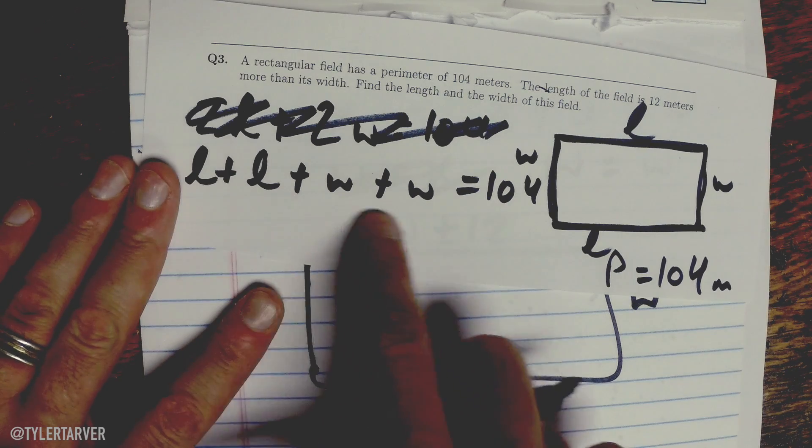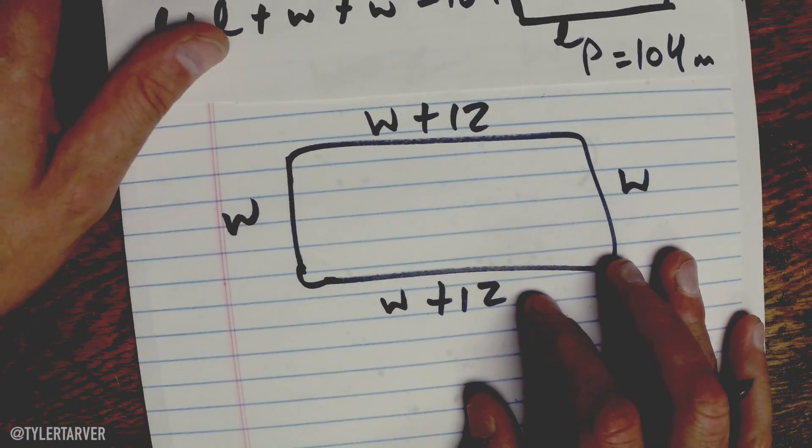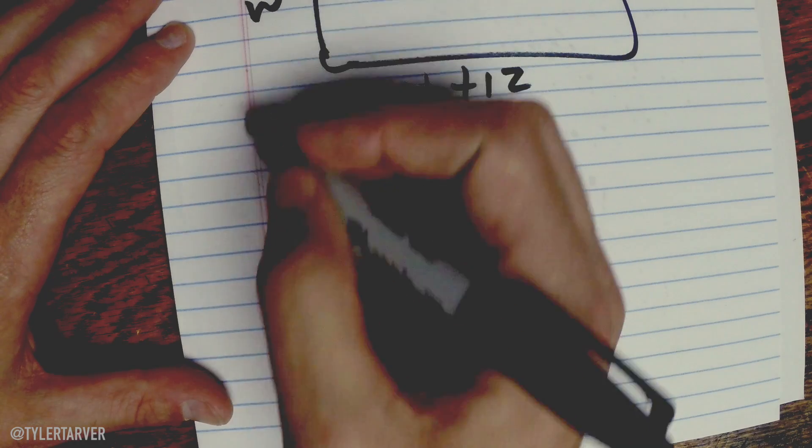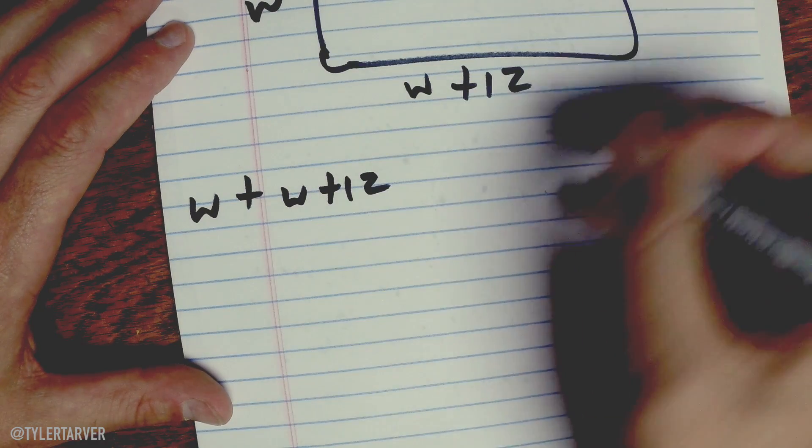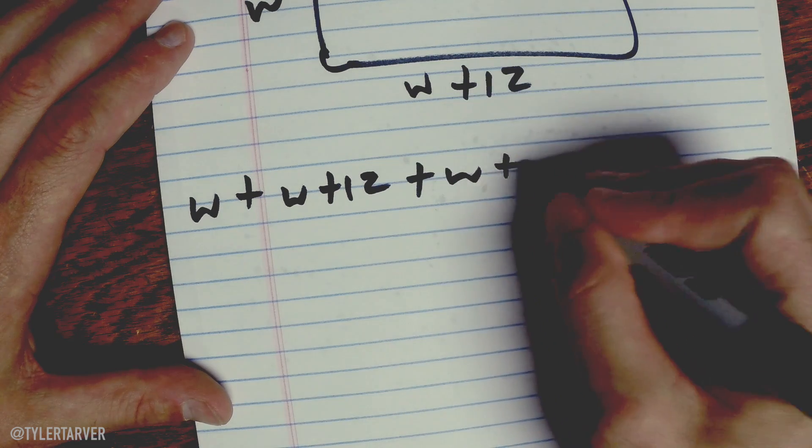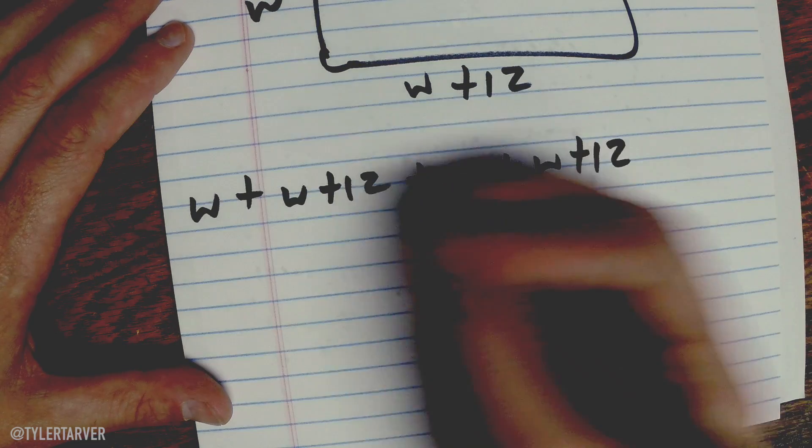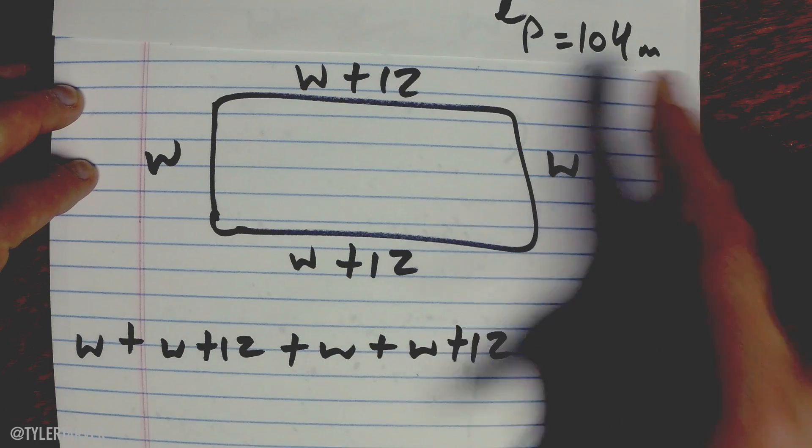We add our two lengths together, our two widths together, and we set it equal to 104. So let's try it out. Ready? So I'm gonna add my W plus my W plus 12 plus my W plus my W plus 12. I know it's long but make sure you get it right. We know our perimeter is still 104.